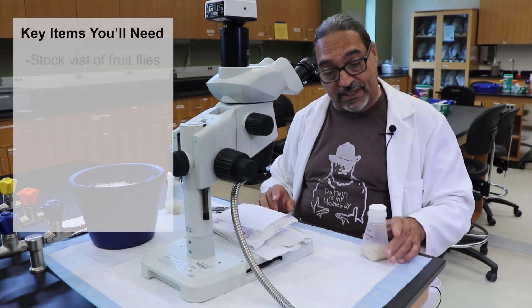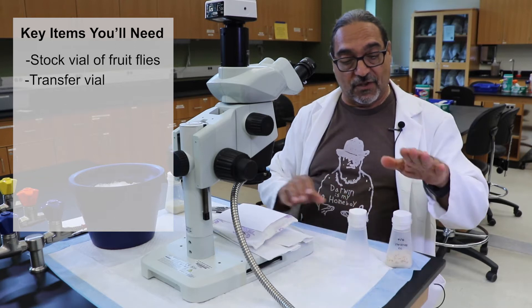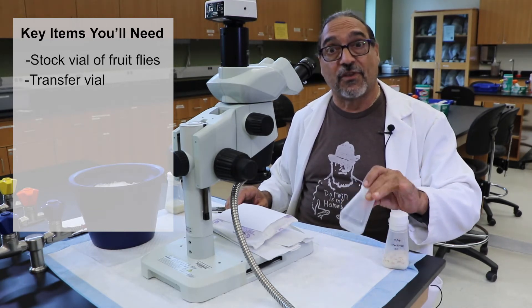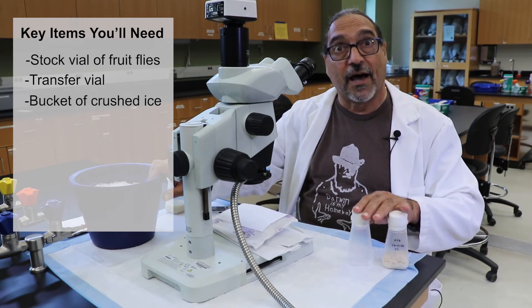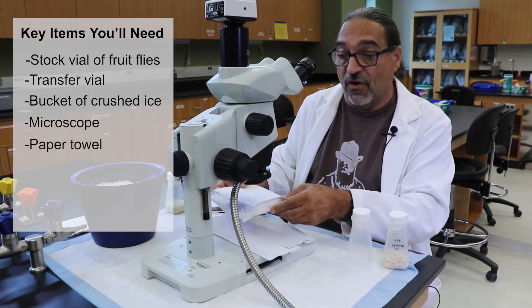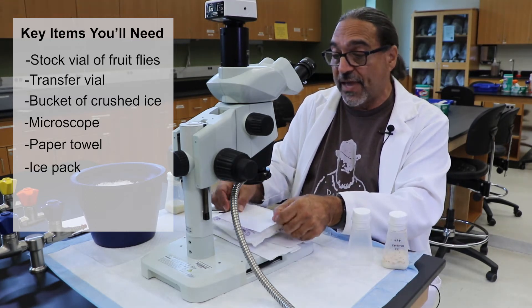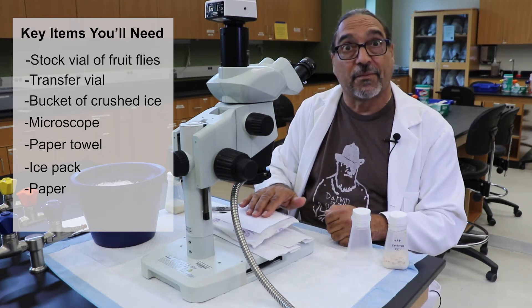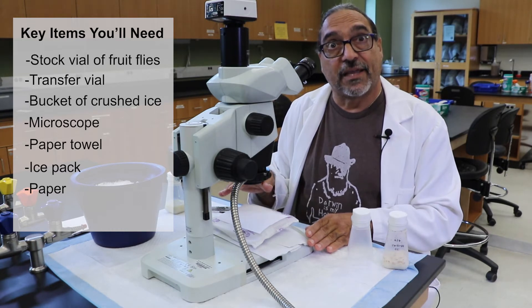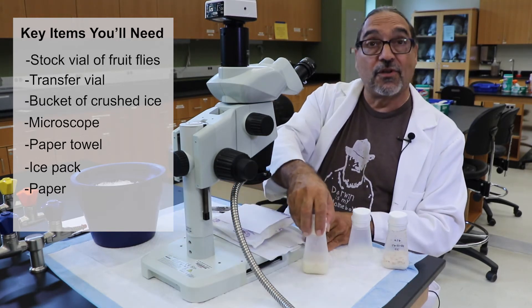Obviously, the first thing you need is a vial, a stock vial of fruit flies. Here we just have our stock vial of wild type fruit flies. And we'll need a transfer vial. We have a bucket filled with ice, just crushed ice. And on the stage of our microscope, we place paper towels because we don't want to get the stage wet. And we use a simple ice pack used in sending cold materials through the mail, covered with just a small sheet of plain typewriter or copier paper. This then will become the stage from which we can view the flies, separate them by whatever phenotype you're interested in discerning, and then be able to put them into the new mating vial.